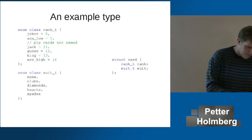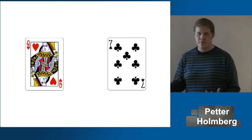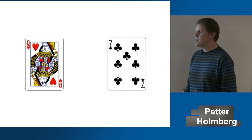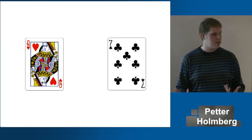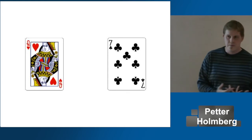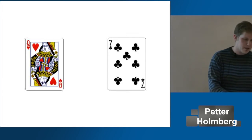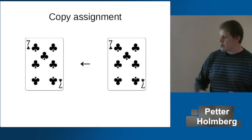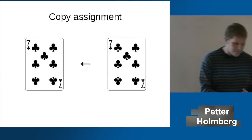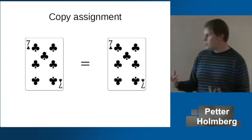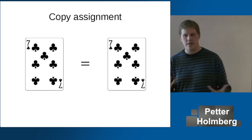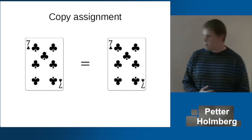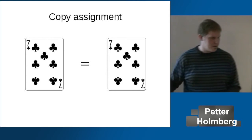Why is that? With semi-regular types, you can turn one of these objects into a copy of the other — so we have a copy assignment. We read from the right object and overwrite the object on the left side. And we get two equal objects: two separate objects representing the same abstract thing, the same playing card. This is mathematical equality, not assignment.